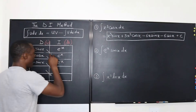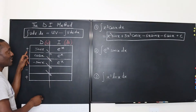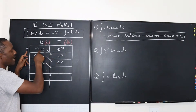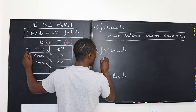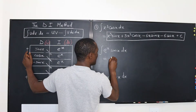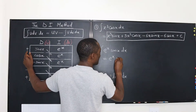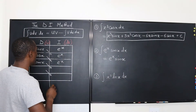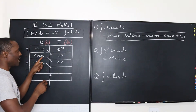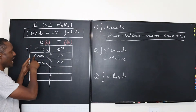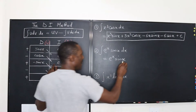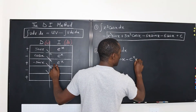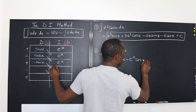You do the diagonal, also recognizing the sign. It's going to start with E to the X sine X — that's the first answer. Then you go to the next one: it's going to be negative cosine X times E to the X, so that's minus E to the X cosine X.